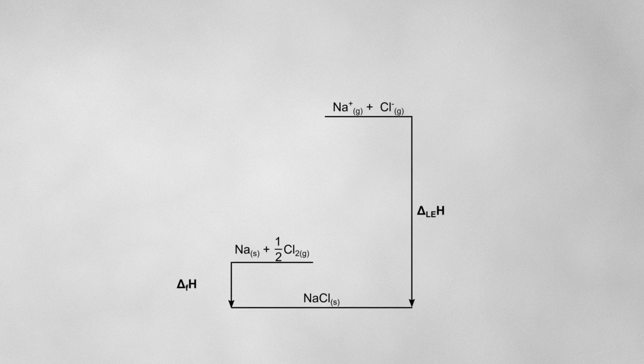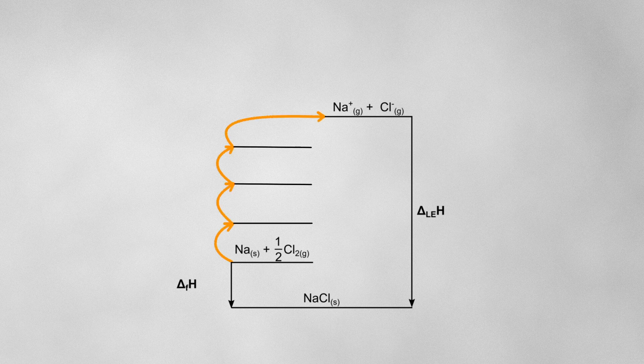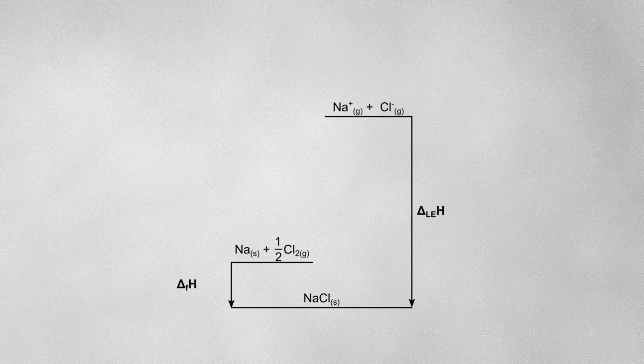Now, if we could connect these two energy levels using various other enthalpy changes, we'd effectively have a big Hess cycle, which we can solve to find the missing lattice enthalpy. The way we do this is to think which enthalpy changes will convert the constituent elements in their standard states into the gaseous ions.